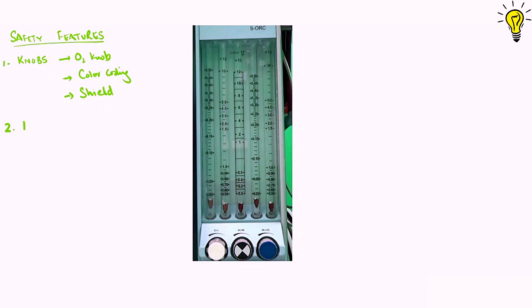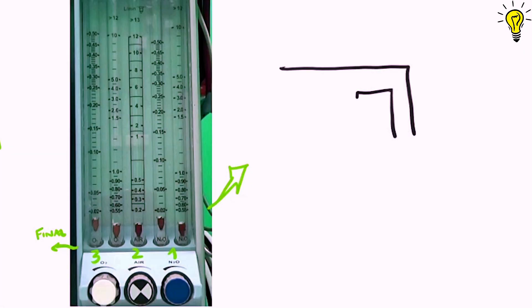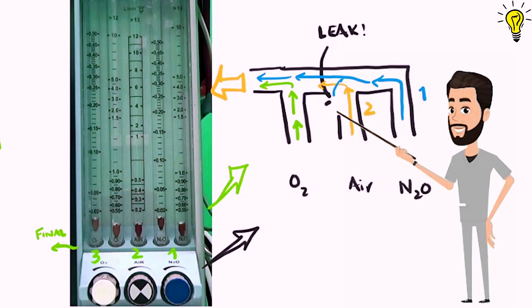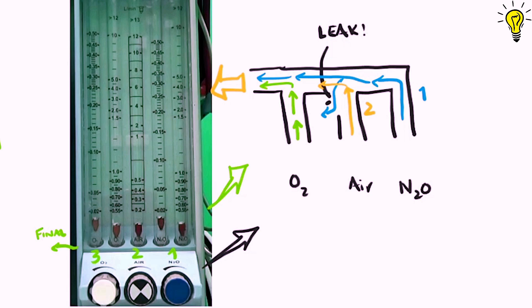Now the second safety feature is the position of oxygen downstream of other gases. Let's see. Let's draw the map of it. So you can see on the machine, nitrous oxide is at position 1, air at 2 and oxygen downstream at 3. The final mixture marked in orange big arrow at outlet. Now if there is any leak or breakage that occurs upstream of the oxygen inlet, then nitrous and air will move out of the leakage but oxygen will continue its normal path. So the final mixture will have less nitrous but oxygen content will not be affected.